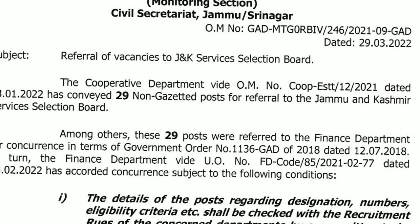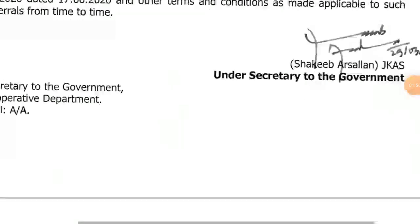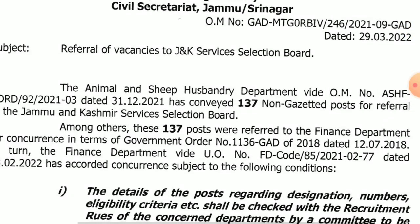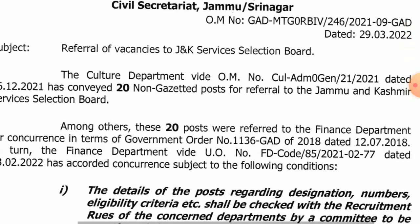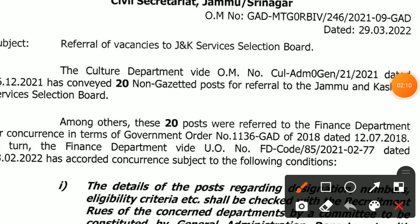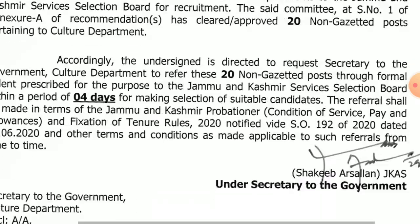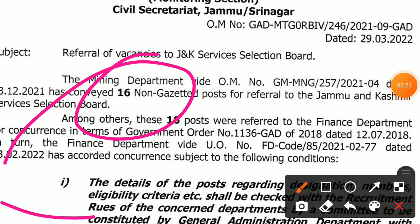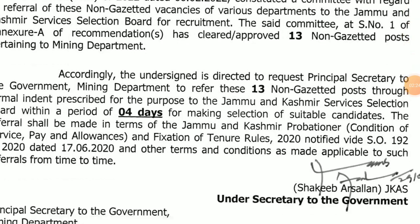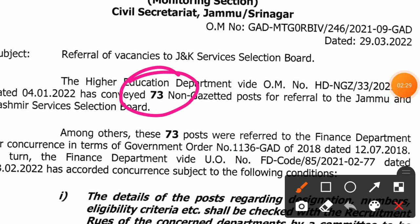Animal and Sheep Husbandry Department has 137 posts. The Department of Culture has 20 posts. The Mining Department has 16 posts. Higher Education Department has 73 posts.